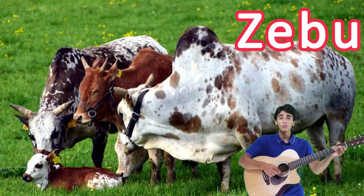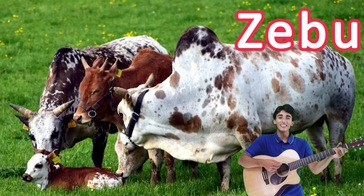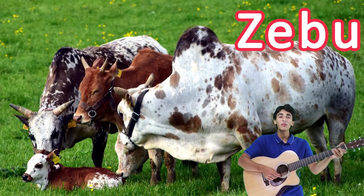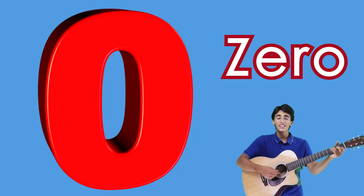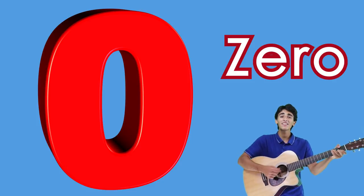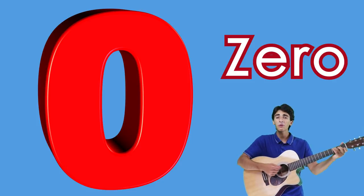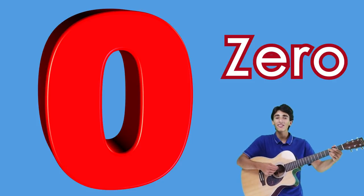Z is for zebu, Z, Z, zebu. Z is for zebu, letter Z. Z is for zero, Z, Z, zero. Z is for zero, letter Z.